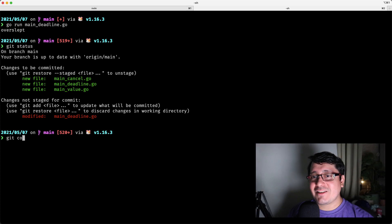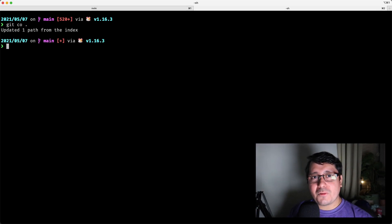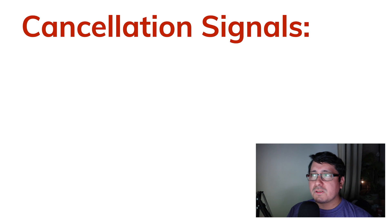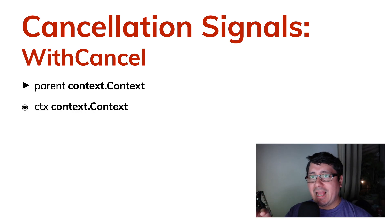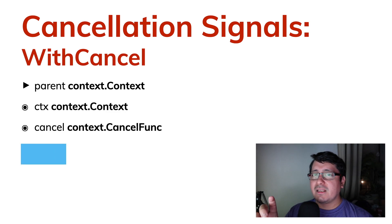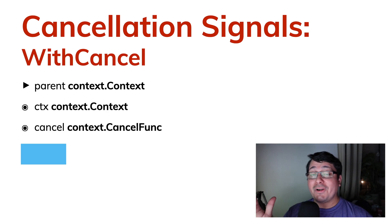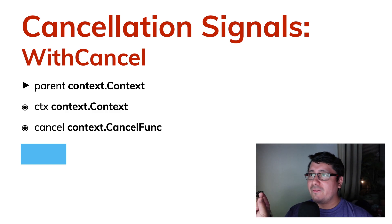Let's go back and discuss the other functions available in the context package. Besides deadlines, we also have cancellation signals. The way this works is you have a function called WithCancel that receives a parent and returns a context as well as a cancellation func. Instead of waiting for a time, you literally have to call that cancel function to trigger all the cancellations associated with the context derived from the initial context.